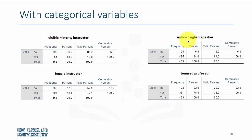So why don't you try with visible minority, native English speaker, and tenured professor. Select these categorical variables and reproduce these results by yourself.